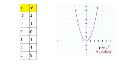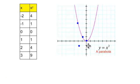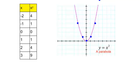Now we will look at the parabola: y equals x squared. When I plug in negative 2 and square it, I get positive 4. Negative 1 squared gives positive 1. Positive 1 squared gives 1. And plugging in 2 gives 4; plugging in 3 gives 9. That is the graph of the parabola.